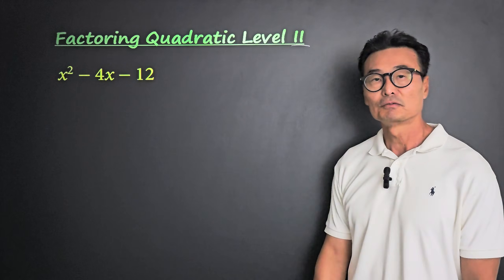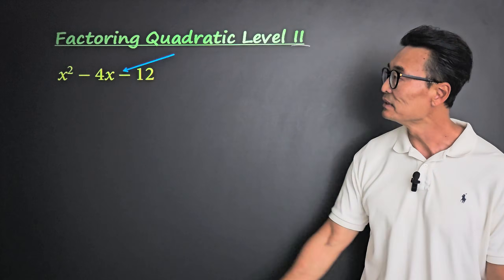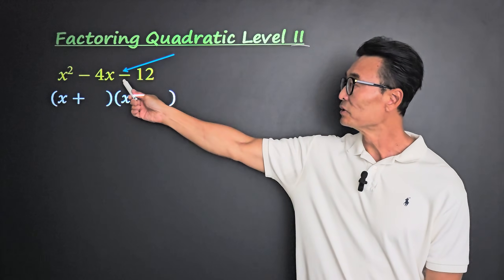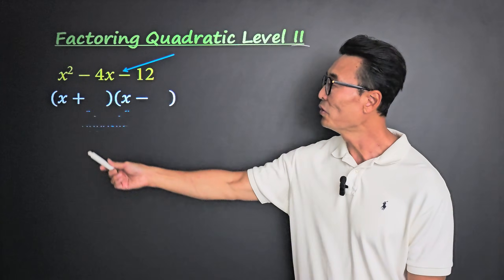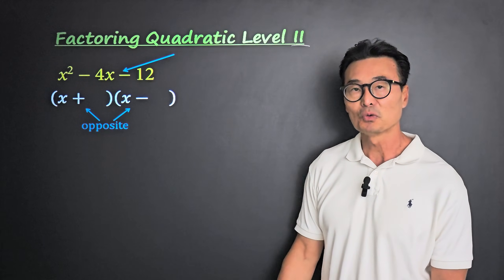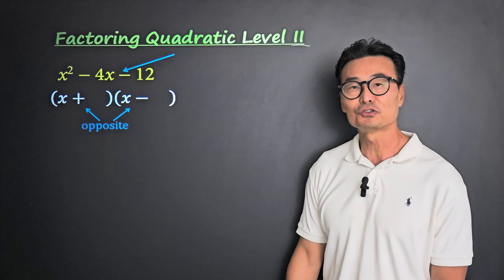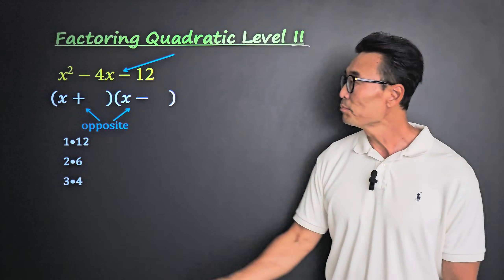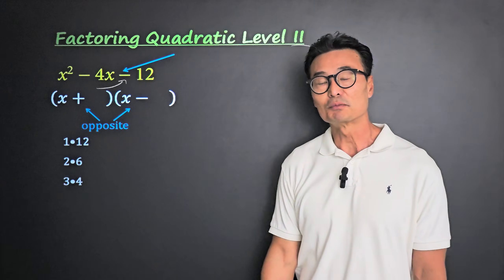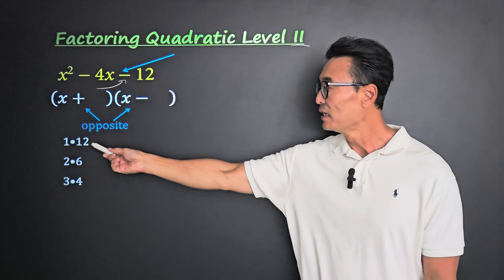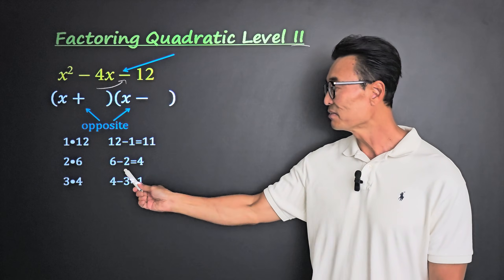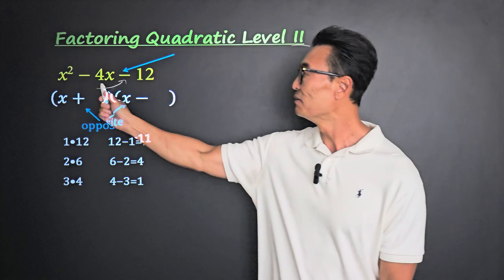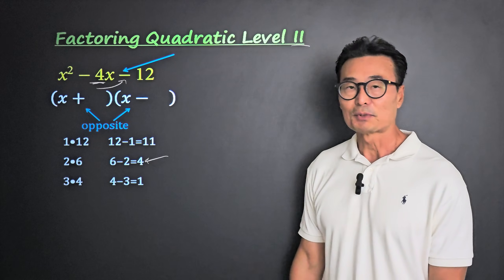For level 2, notice that the c value or the third term is negative. When the third term is negative, we always go plus-minus — opposite signs of each other. We're going to find all the numbers that multiply to 12: 1 and 12, 2 and 6, and 3 and 4. Because the third term is negative, we subtract these numbers — 12 minus 1, 6 minus 2, and 4 minus 3 — and find the one that gives us a difference of 4, which is 6 minus 2.